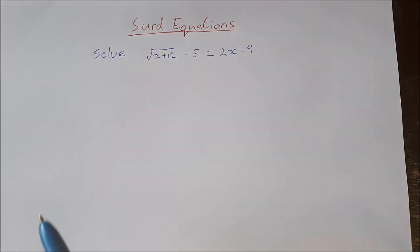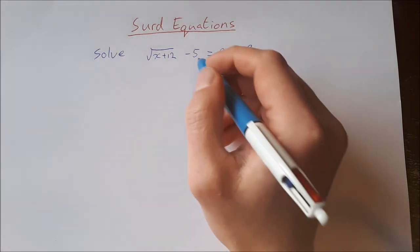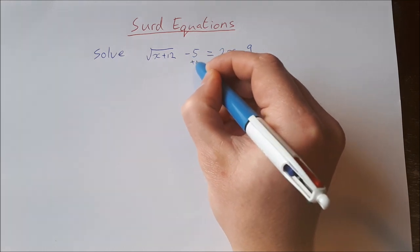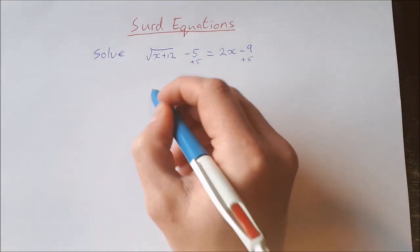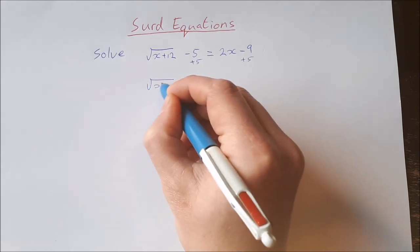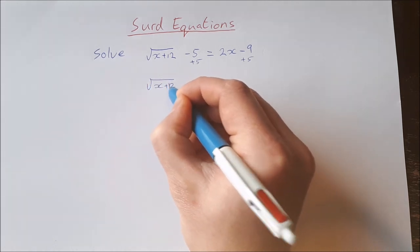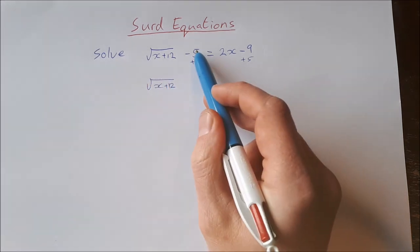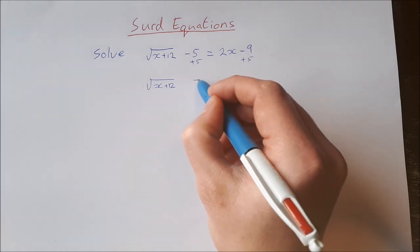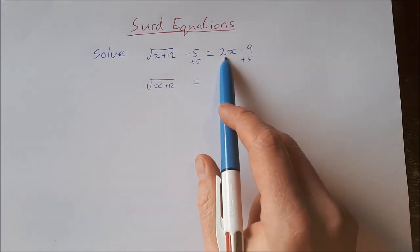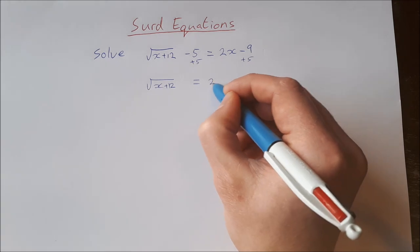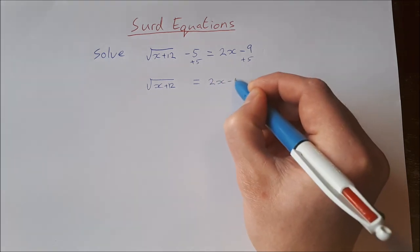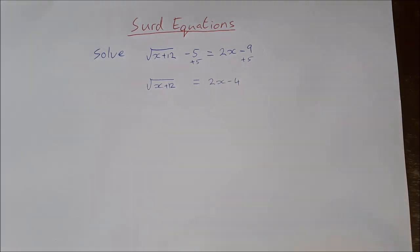Let's start off by isolating the radical — you want to get it on its own in order to get rid of it. So we add five to both sides: the square root of x plus 12, minus five plus five, is zero, so that's gone. And then 2x minus nine plus five is 2x minus four.